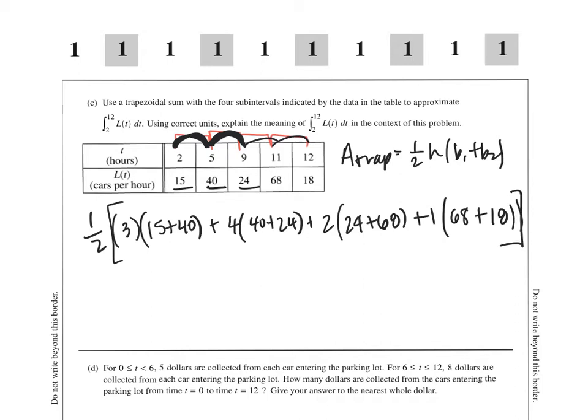Again, you have a calculator that you could plug that into. You also don't need to get a final answer. AP would accept what we have. If you do plug this in, I get 345.5.